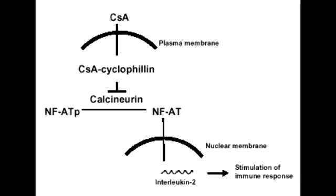What is the mechanism of action of cyclosporine? The mechanism of action of cyclosporine is to bind with cyclophiline, which is a cytosolic protein. This forms the cyclosporine-cyclophiline complex, and this complex blocks the differentiation and activation of T-cells by inhibiting calcineurin.